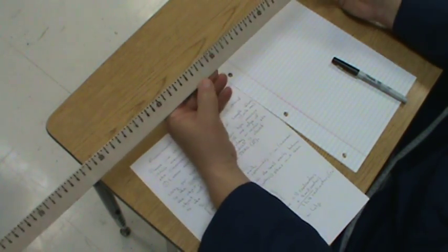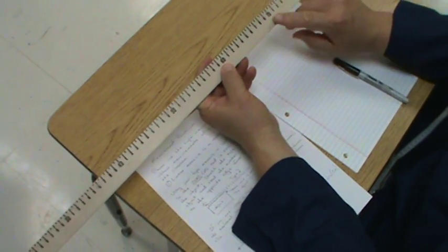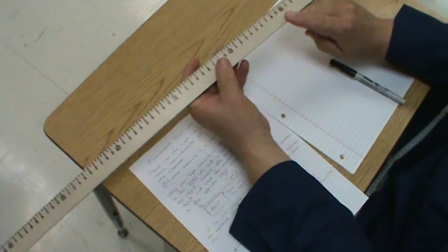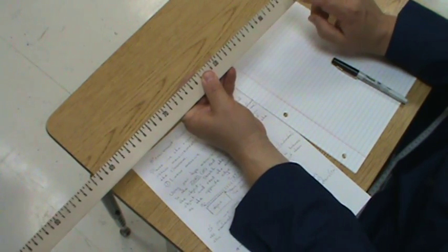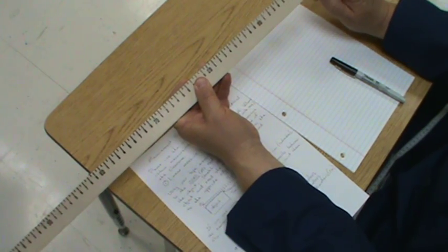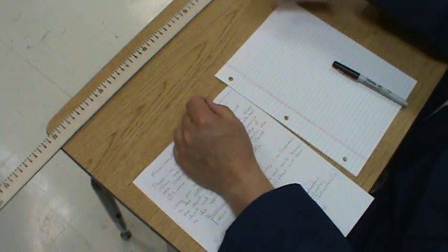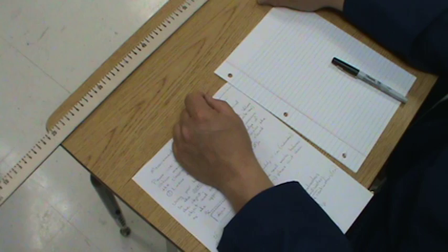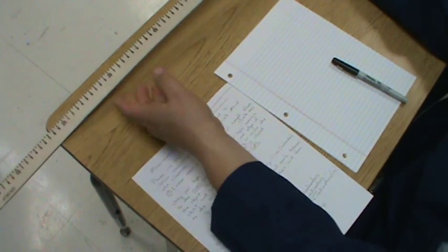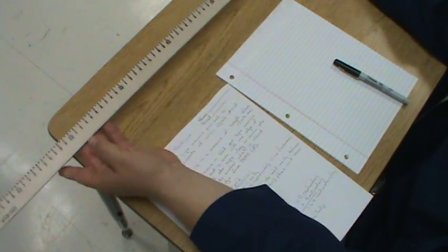As you can see here on my meter stick, we start at one, we go to 10, there's 10 centimeters, 20 centimeters, 30, 40, 50, 60, 70, 80, 90 centimeters, and right here 100 centimeters or one meter. That is our standard unit of measurement. Each centimeter is divided into 10 millimeters, and 10 times 100 equals 1000, so there are 1000 millimeters in one meter.